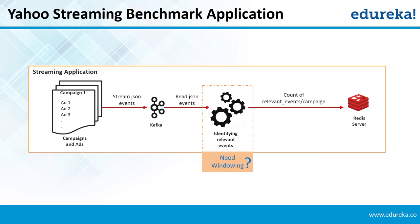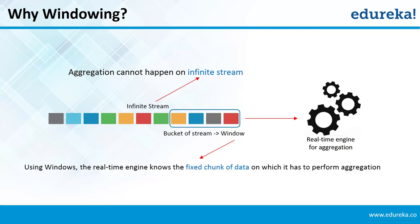When streaming data, you cannot aggregate an infinite stream as there is simply no end to it. So we form buckets of streams called windows. Using windows, the real-time engine knows the fixed chunk of data on which it has to perform aggregation. For now, just remember: for aggregation of infinite streams, one needs windowing.